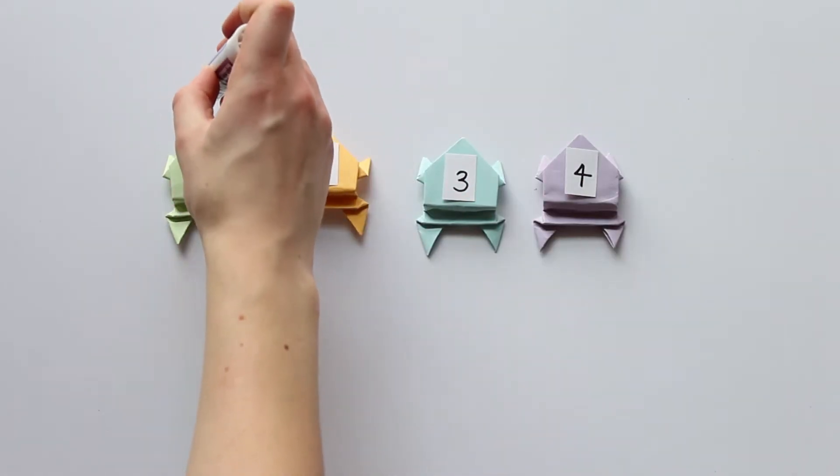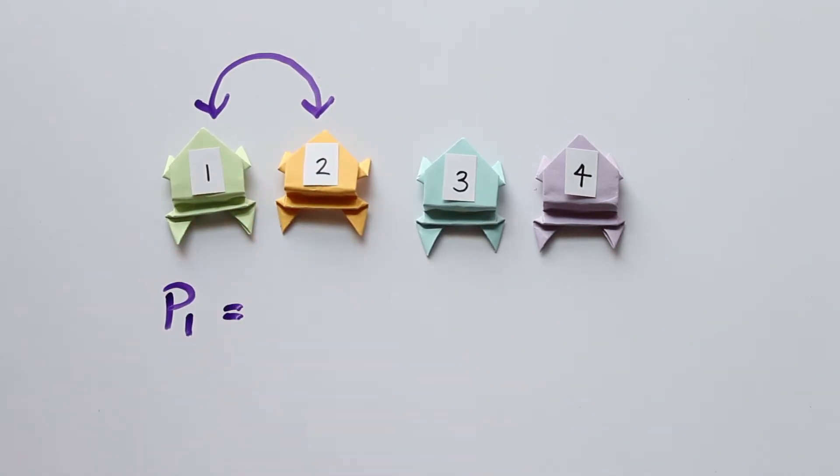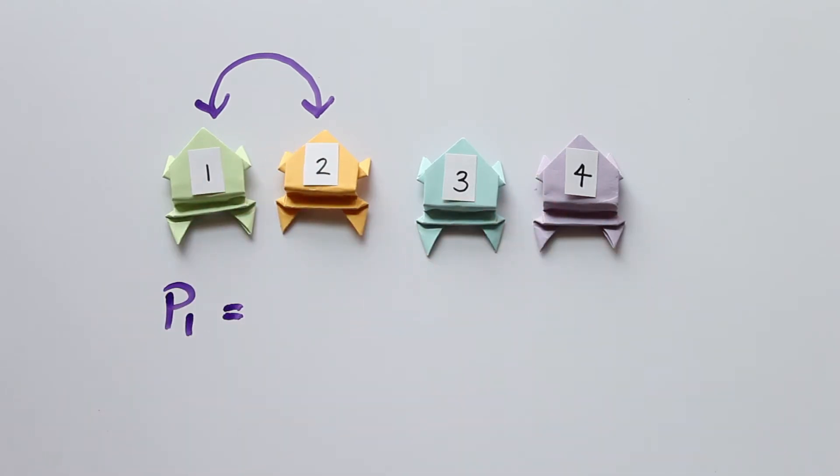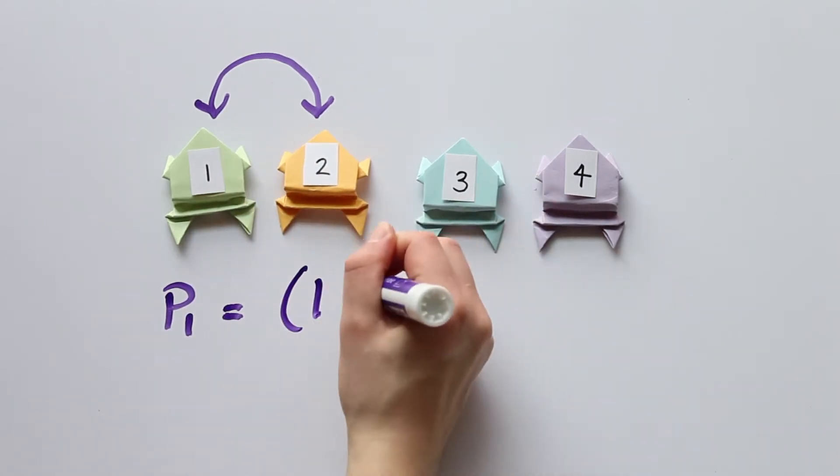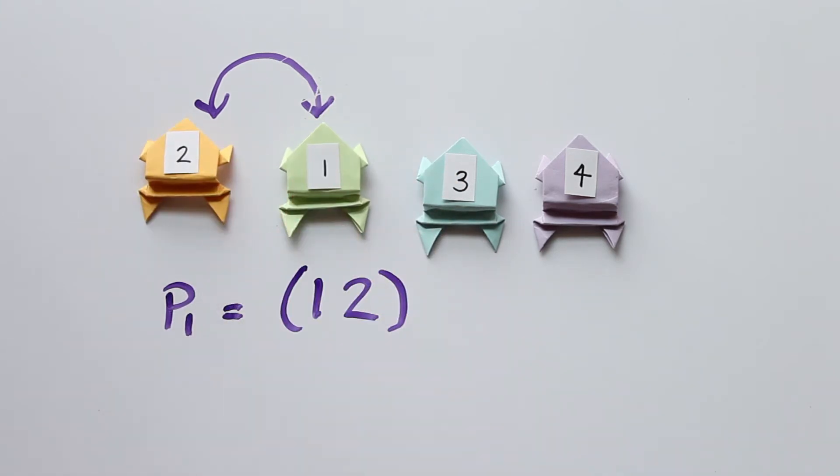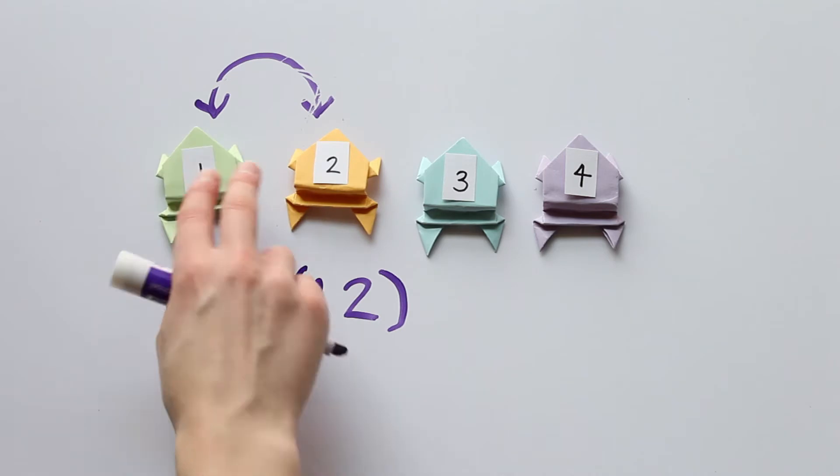If I have a permutation that just switches the first frog with the second frog, the only information we need to record is what happens to the first and the second, since the third and the fourth stay in the same place. We can write this notation 1, 2 to communicate what we did. We read this from left to right. It means 1 goes to 2 and 2 goes back to 1.